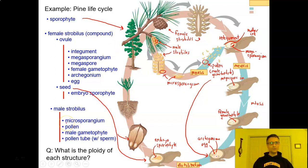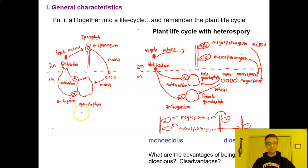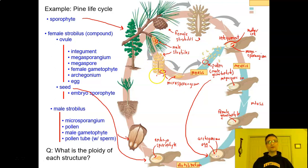So our whole pine life cycle is still the basic plant life cycle, updated for heterospory with added structures. This is a monoecious species — a single pine tree with megasporangia in a female strobilus and microsporangia in a male strobilus — though some species have only female or only male strobili. Pay attention to the ploidy of each structure to identify which generation each tissue belongs to.